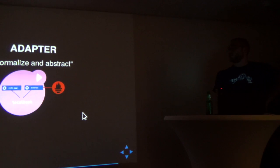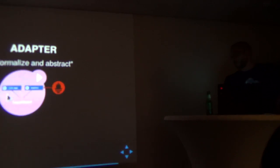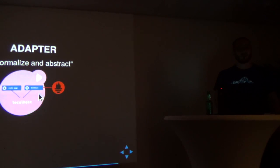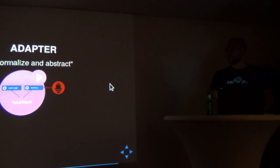Then you have the adapter pattern. It says on the top 'normalize and abstract.' You'd have your Rails app and a container that monitors your application. Here you have the adapter container — the metrics container that would actually collect the metrics and expose it to your metrics-collecting system, which would be Prometheus here, in order to have a generalized API for your metrics.